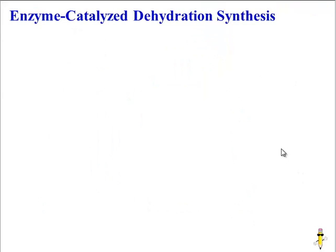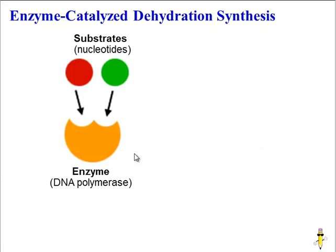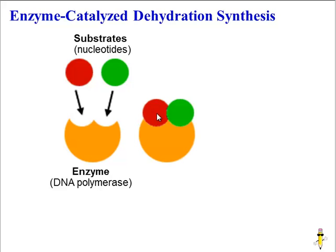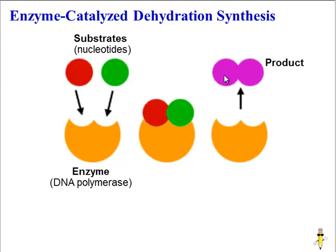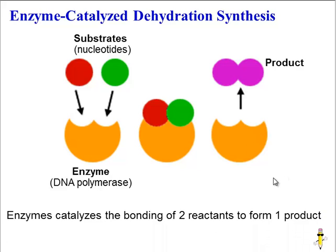Here's another example, this time a synthesis reaction. In this case, our enzyme is DNA polymerase — -ase because it's an enzyme, and polymerase because it's going to help build a DNA polymer. Our substrates this time are two small molecules, two nucleotides. The two substrates bind to the enzyme with a nice, perfect fit, and then the enzyme catalyzes the bonding of these two substrates. It then releases its product, and the enzyme is unchanged, so it can go off and catalyze another chemical reaction.